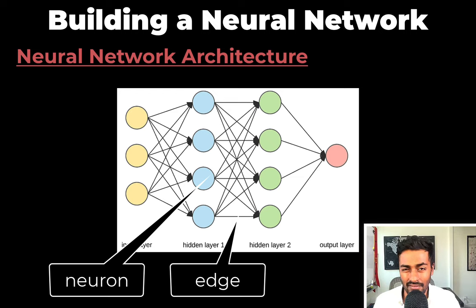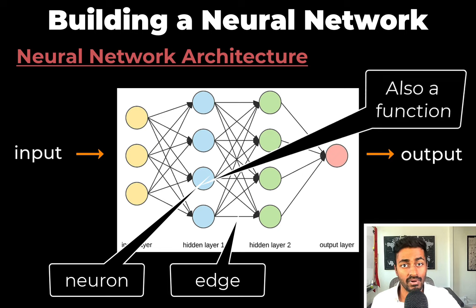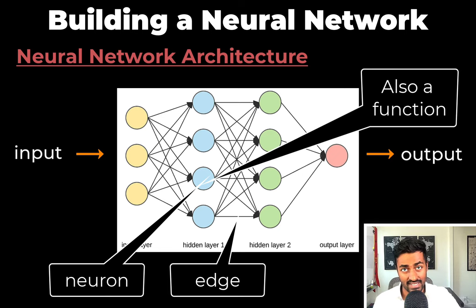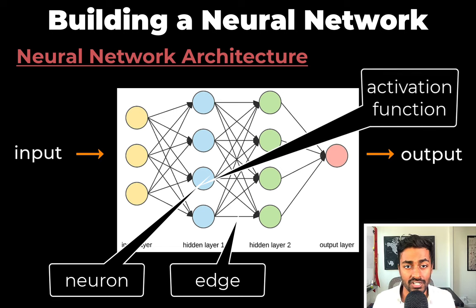And each edge connection connects these neurons and has some weight, which is some scalar value. Now we mentioned before that the entire neural network is a function because it has an input and an output. But because each neuron also has an input and an output, then each neuron is also a function. But what is this neuron function? Well, it's an activation function.